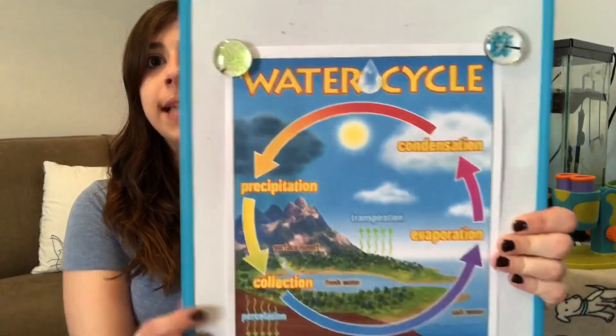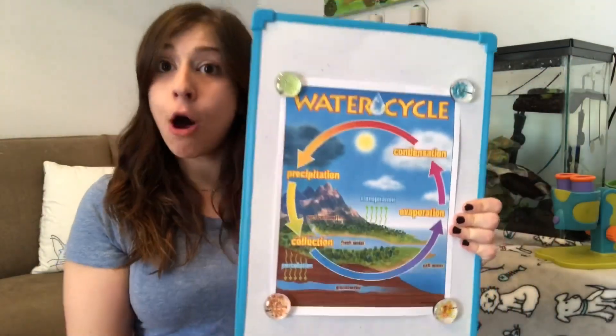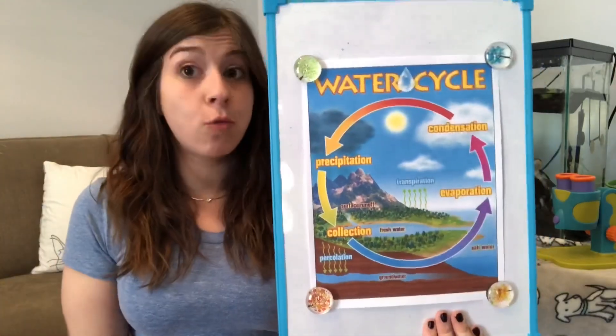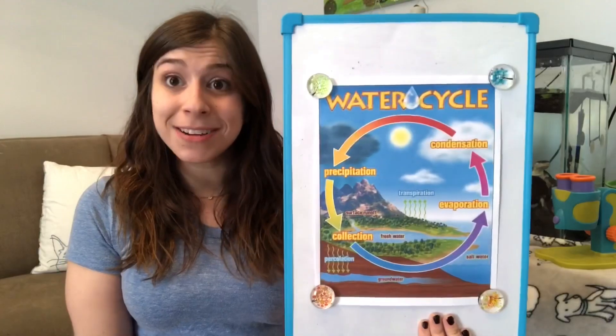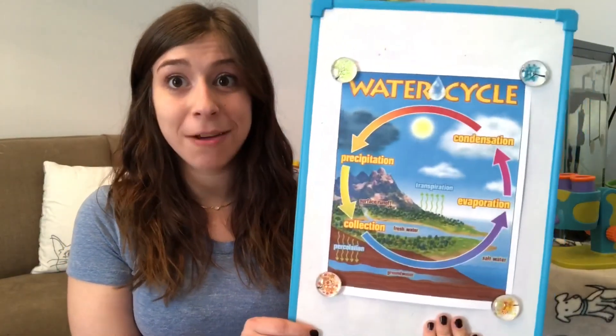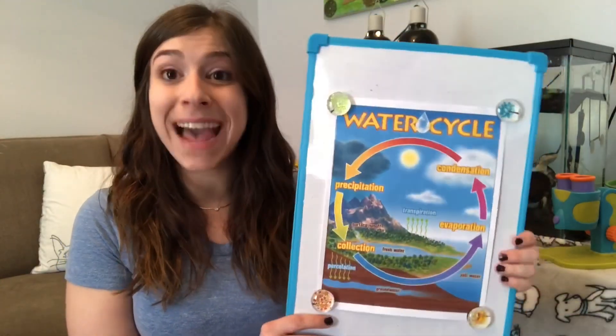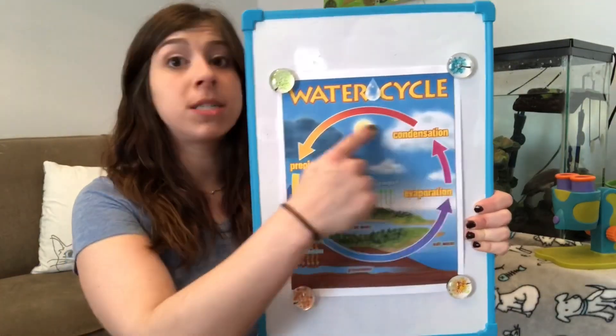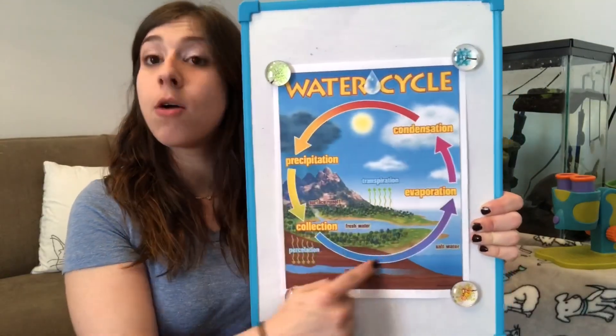Hi everyone, it's me Ashley, and I thought today we could talk about the water cycle. We talked about it during the school year, but now that we're home I thought we could talk about it again. I have this poster labeled 'water cycle' — this is how all of the water in the world gets transported around the world. There is no such thing as new water; all the water on our planet has been here since the dinosaurs. So if you go wash your hands right now, the water coming out of your faucet might be water a dinosaur drank, because the water on our planet is always going through a cycle.